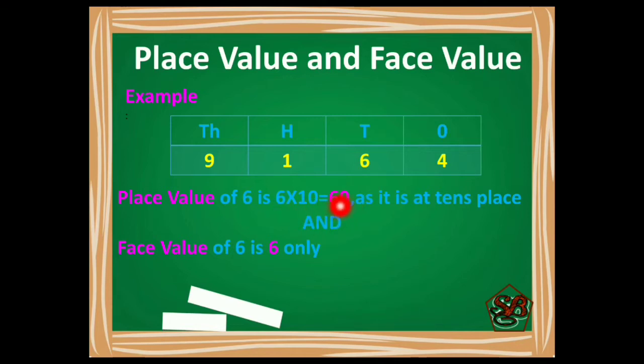Here in this example, if we talk about digit 6, as it is at 10's place, its place value will be 6 times 10 equals 60, and the face value of 6 will be 6 only as it appears.